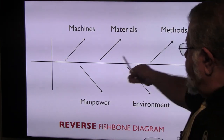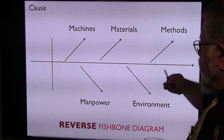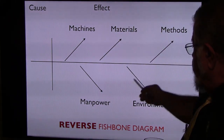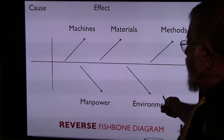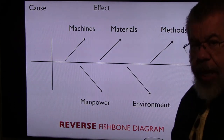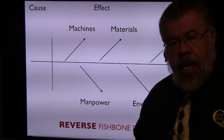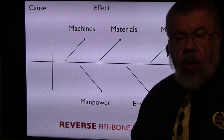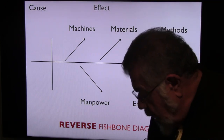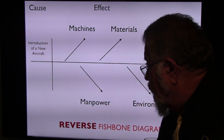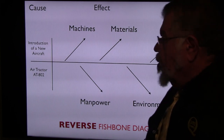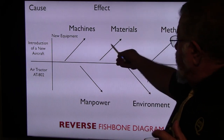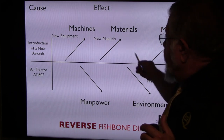Let's take a look at an example. You'll notice that the fishbone diagram is a little bit different. We have the cause, and the effects are the machines, the material, the methods, the manpower, and the environment. So the cause is going to be the change. For example, let's say we're introducing a new aircraft into our company — in this case, an aircraft called the Air Tractor AT-802. Then we brainstorm with our team on what effects we would have.